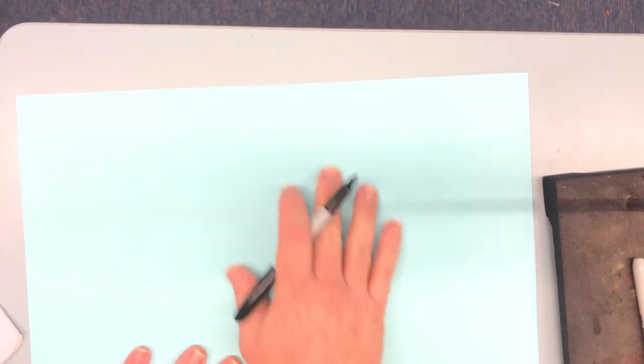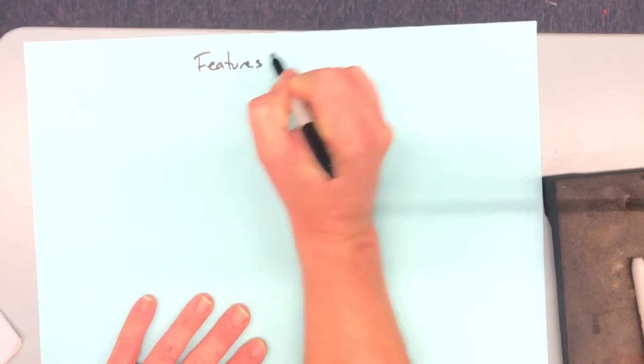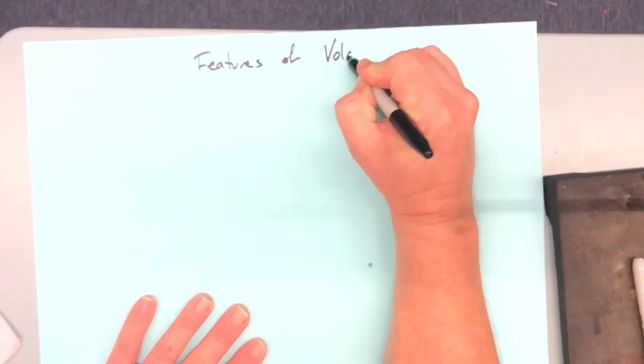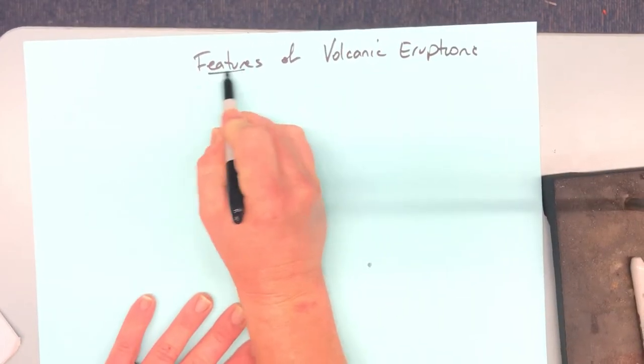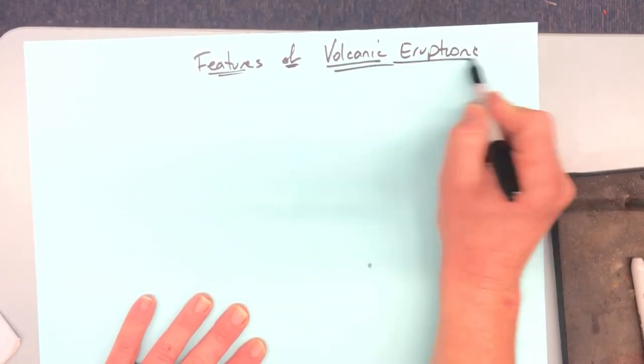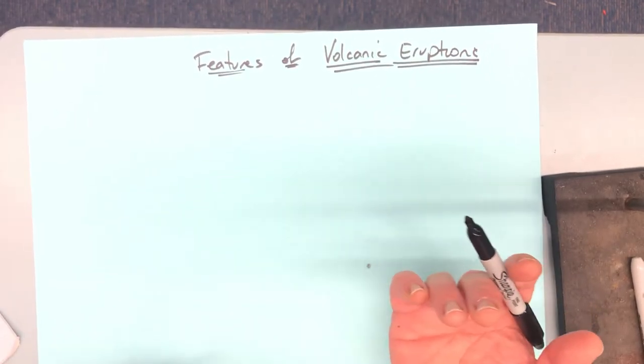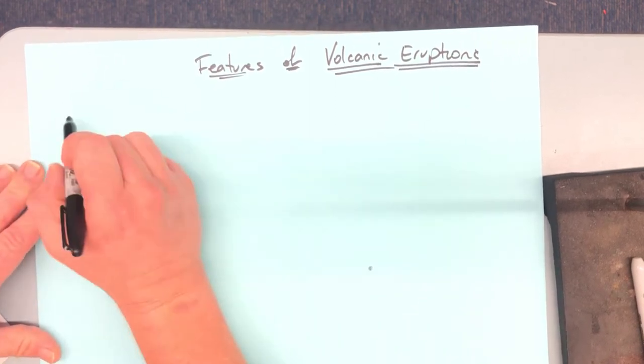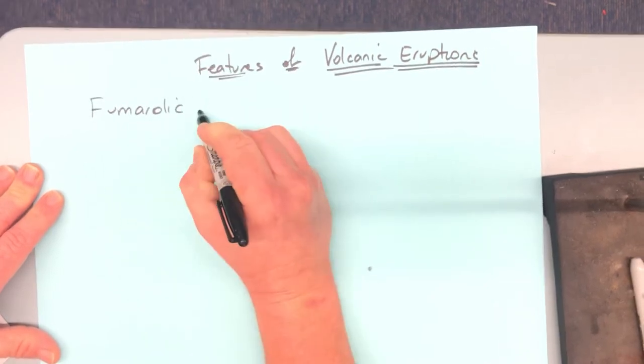All right, ladies and gentlemen, here we go with our continuation of yesterday's lesson. We are looking at features of volcanic eruptions. Make sure I get my paper in the right spot. So features of volcanic eruptions. Yesterday we looked at effusive eruptions, and we're sort of segueing fumarolic and effusive really nicely into each other. So we want to talk about fumarolic eruptions.